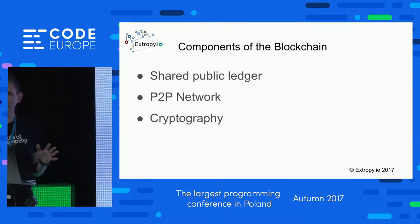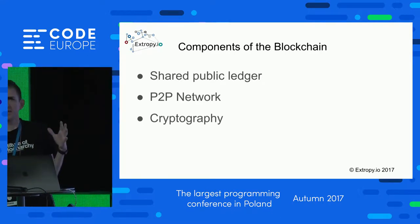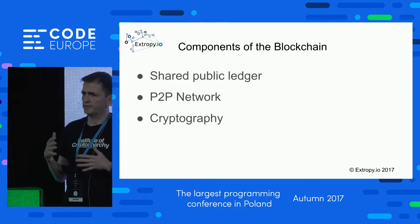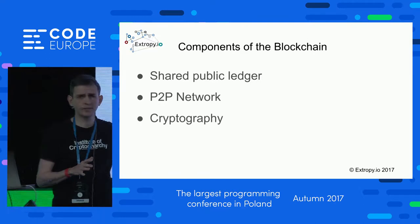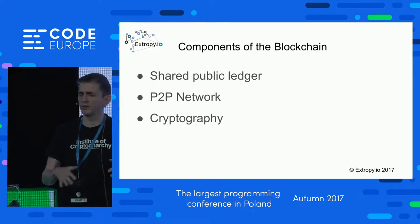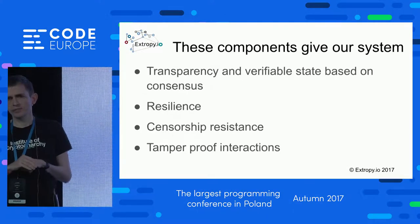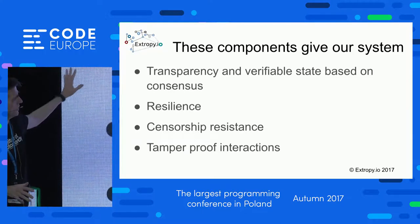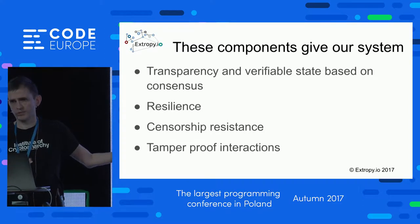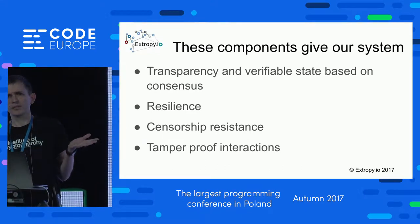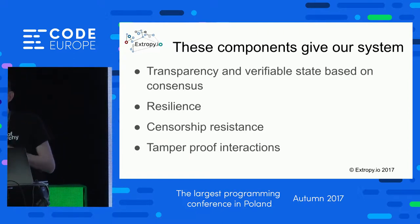To summarize the components specific to blockchain: we have a shared public ledger shared by everybody — everybody has their own copy of the data, everybody can see it, it's transparent. All transactions are sent around a peer-to-peer network — an ad hoc network where anybody can join or leave at any time without affecting the network as a whole. And we have cryptography to make our system secure and tamper-proof. These give us transparency, consensus, resilience with no single point of failure, censorship resistance, and tamper-proof interactions.